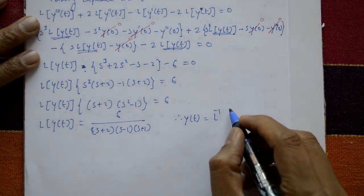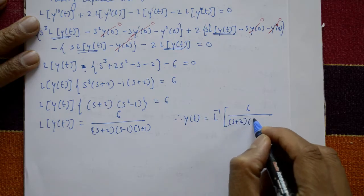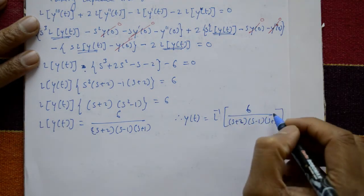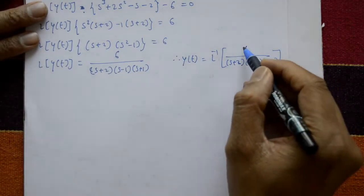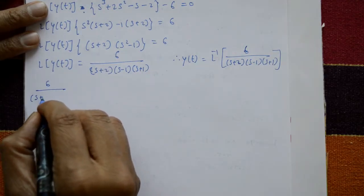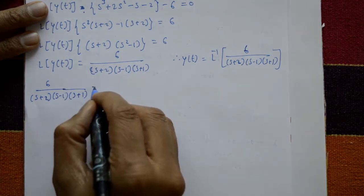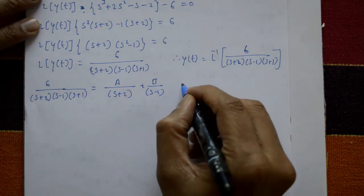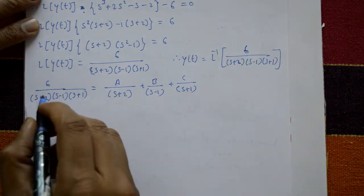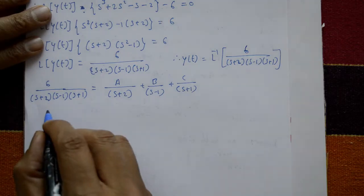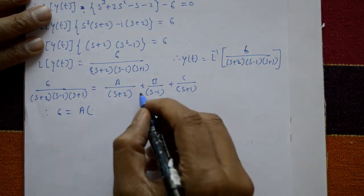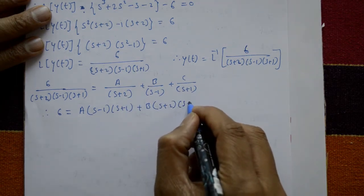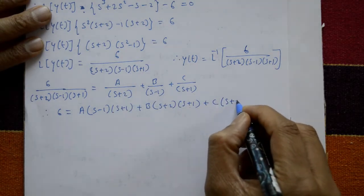To find y(t), we need the inverse Laplace of 6/[(s+2)(s-1)(s+1)]. Using partial fractions: 6/[(s+2)(s-1)(s+1)] = A/(s+2) + B/(s-1) + C/(s+1). Multiplying through: 6 = A·(s-1)(s+1) + B·(s+2)(s+1) + C·(s+2)(s-1).